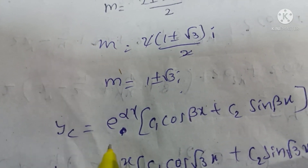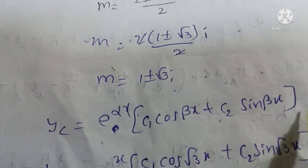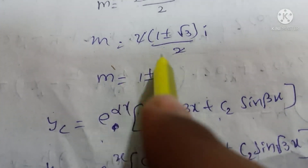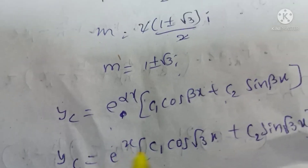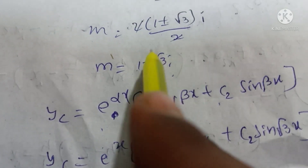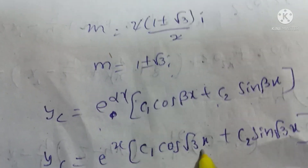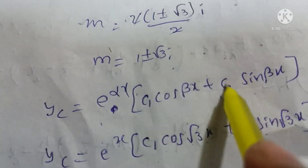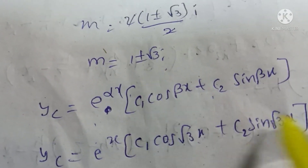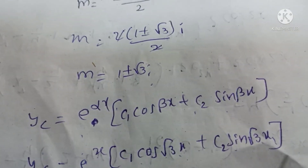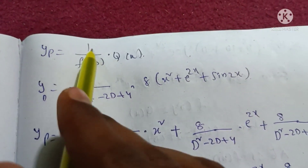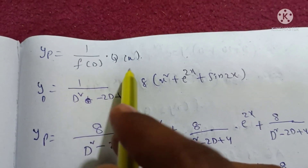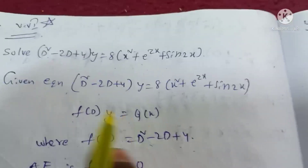With complex roots, the formula for yc is: yc equals e to the power alpha x into c1 cos(beta x) plus c2 sin(beta x). Here alpha equals 1 and beta equals root 3, so yc equals e to the power x into c1 cos(root 3 x) plus c2 sin(root 3 x).